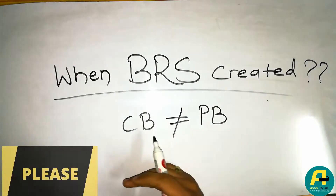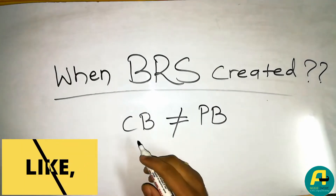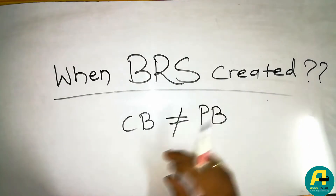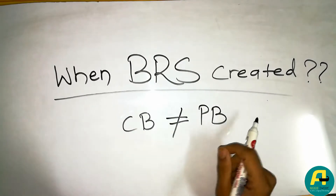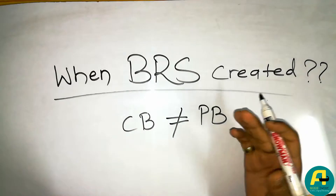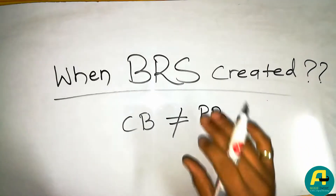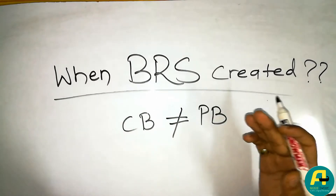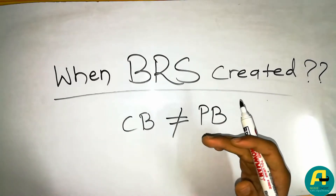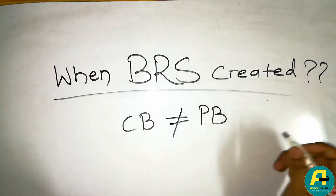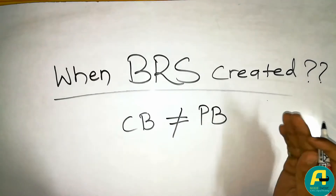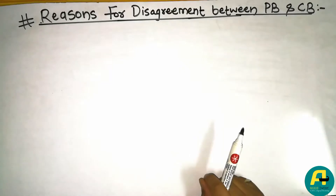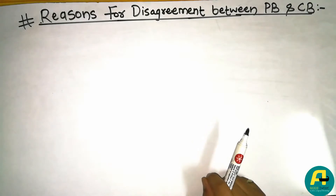BRS is created when the balance of the cash book and the pass book are unequal — when there is disagreement between the cash book and the pass book. We have to eliminate that disagreement, so we create the bank reconciliation statement. We are going to discuss what are the reasons behind this disagreement.